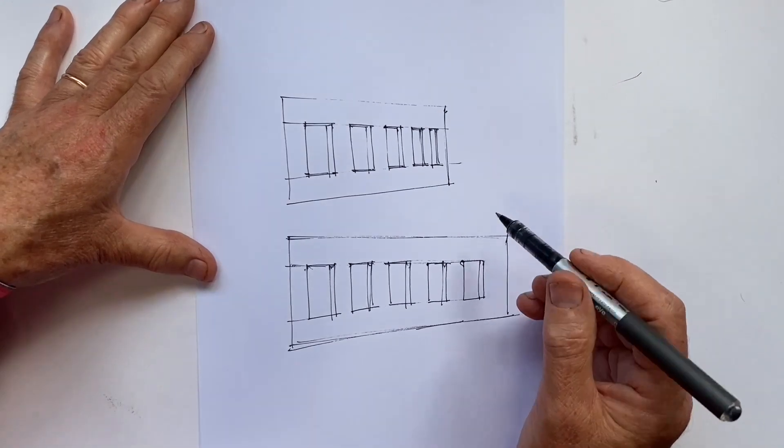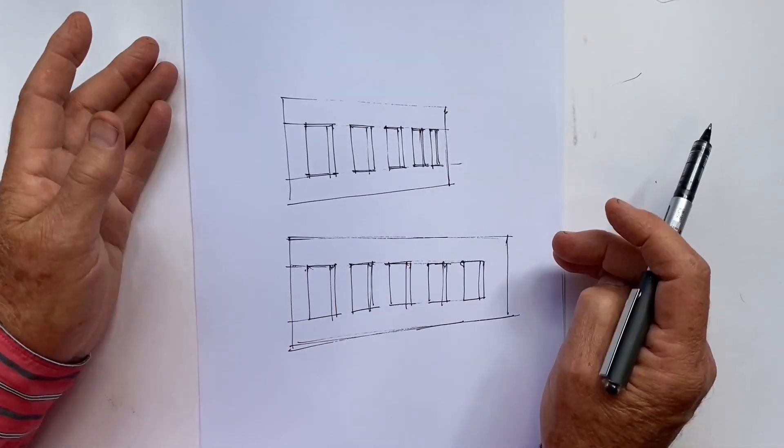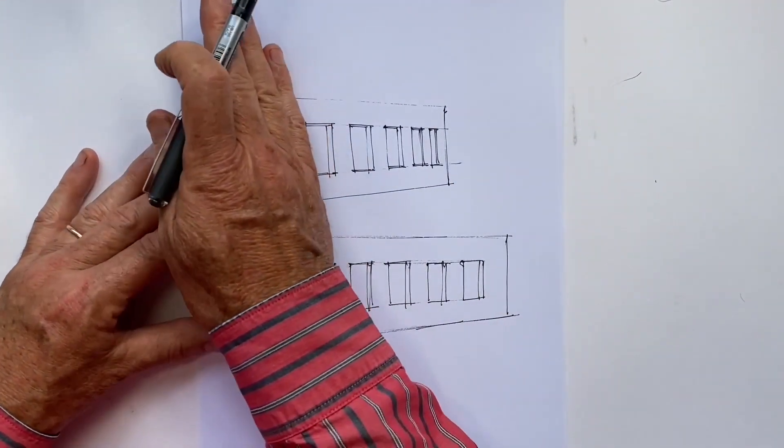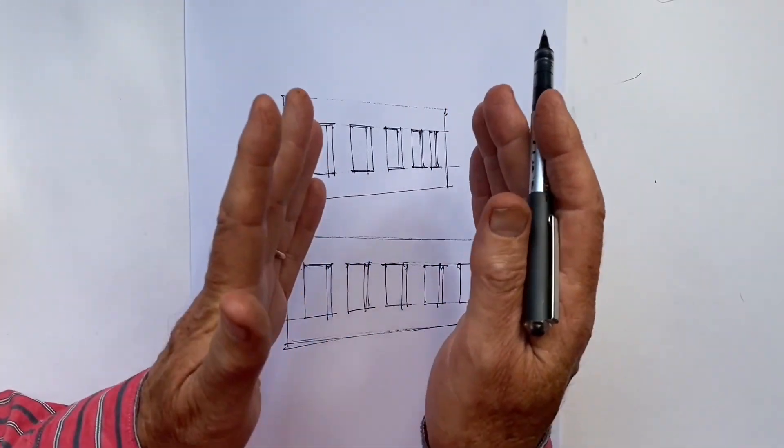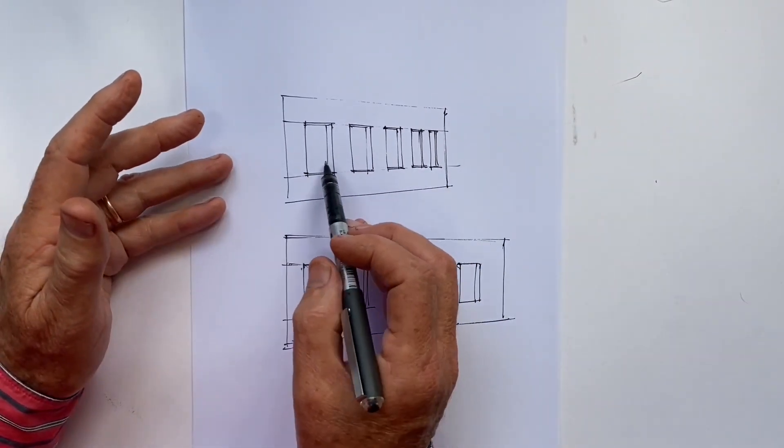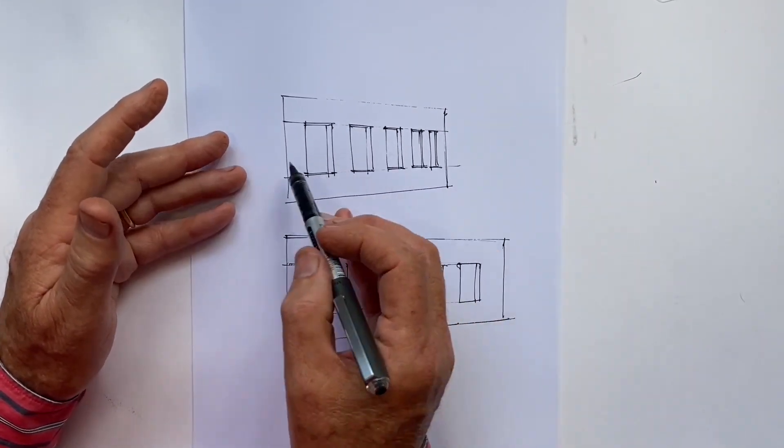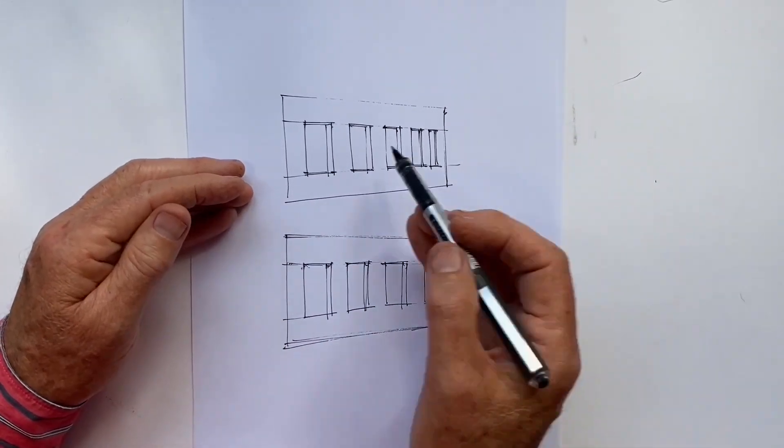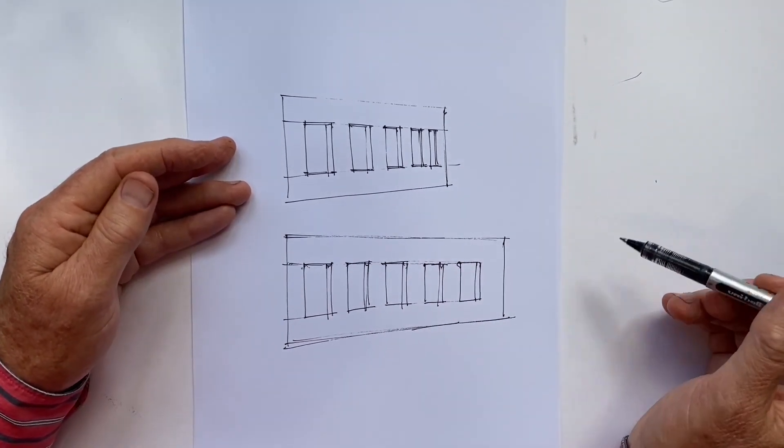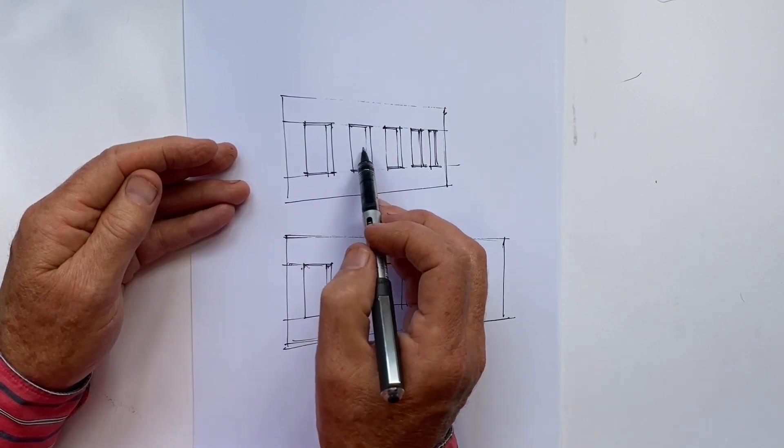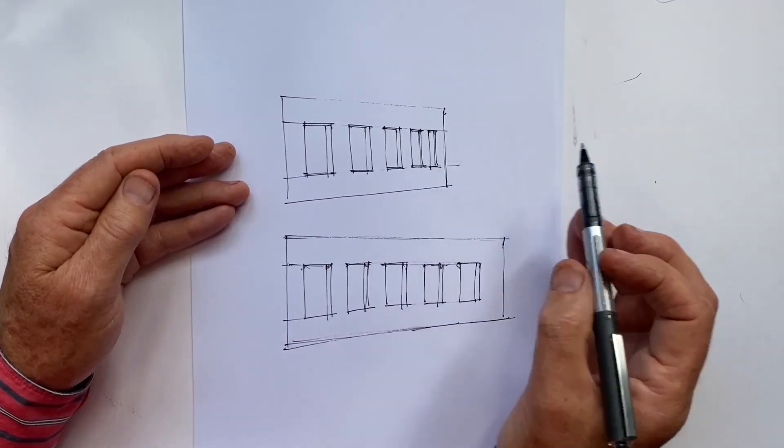In this first example, we've used foreshortening, the principle that as an object moves further away from us, such as this wall, it becomes more and more visually compressed. So the windows start to appear narrower, the further away they are, and the spaces between the windows appear narrower, the further away they are, and the thickness of the wall appears narrower, the further away it is.